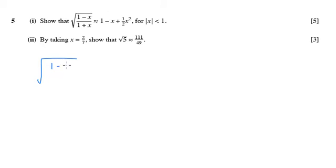So we've got 1 minus 2/7 on the top over 1 plus 2/7 on the bottom, which simplifies to, this would be 5/7 over 9/7, square rooted still. And those sevenths, you can think of them as cancelling out.